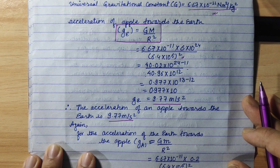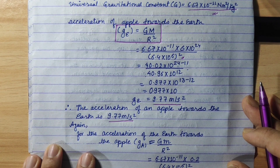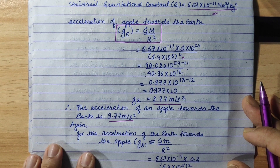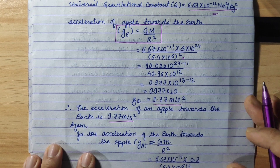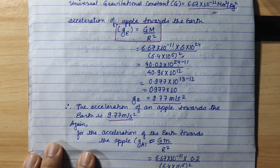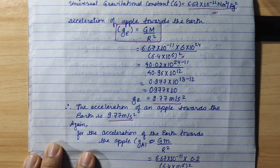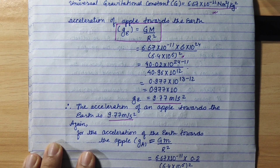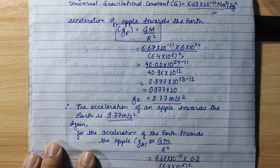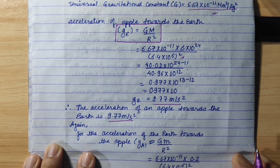Now, for the second part — if we consider the gravitational force as mutual, then the gravitational force on the apple and on the Earth are equal in magnitude. So the two forces are equal.